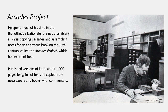He spent years in the Bibliothèque Nationale, the National Library in Paris, copying passages and assembling notes for an enormous book on the 19th century called The Arcades Project. He never finished it. It's published as an unfinished book — about a thousand pages long depending on the edition — full of texts he copied from newspapers and books with commentary. It's been tremendously influential just as a book because it's not a normal history book. It's a kind of philosophy, almost a kind of memoir, but also an encyclopedia — a very innovative and interesting project.